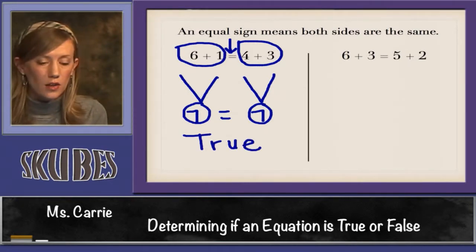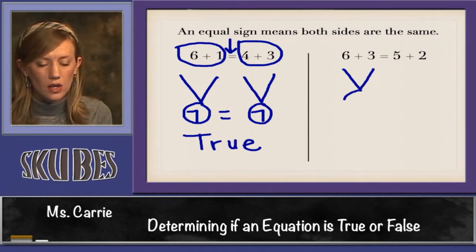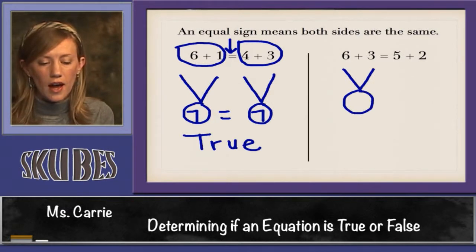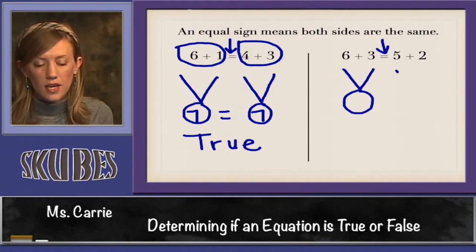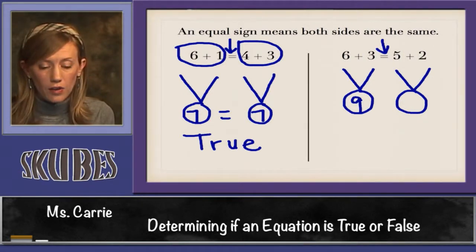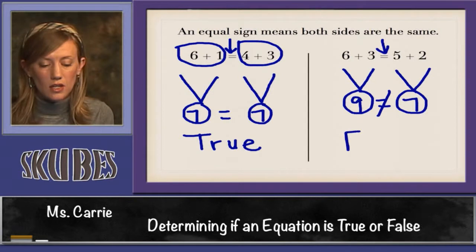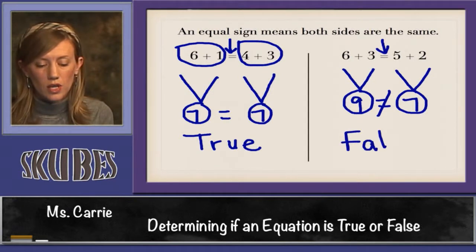Let's look at another one. We have 6 plus 3 on this side and we have to figure out if it's equal to, here's our equal sign, the answer to the problem on this side. We know that 6 plus 3 is 9 and we know that 5 plus 2 is 7. Is 9 equal to 7? No it's not. They're not the same number. So this answer is false.